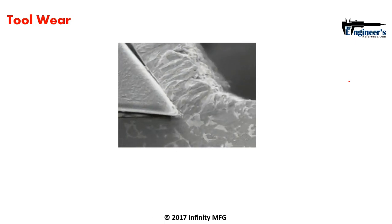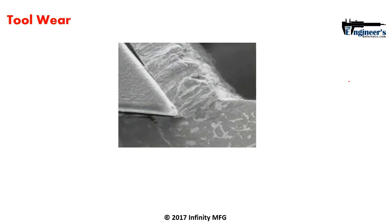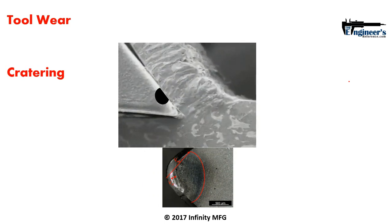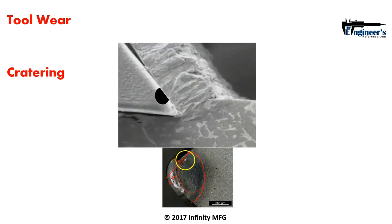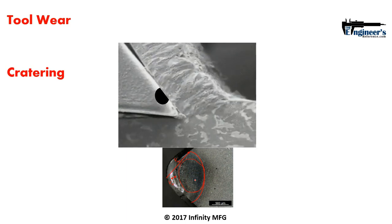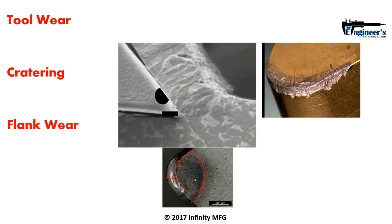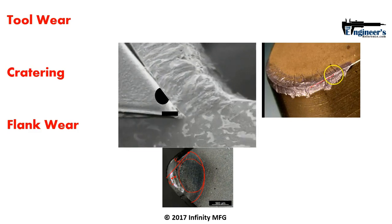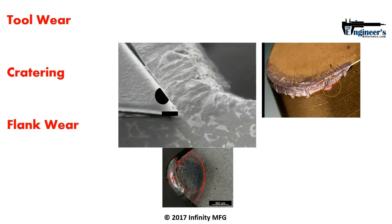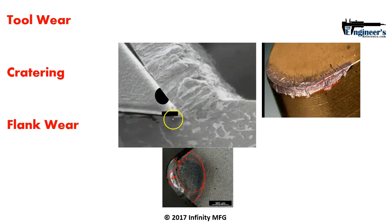With all this force and heat being generated, we're going to have some type of tool wear. One type is cratering, which happens right on the rake face — a hole worn into it from the chip running against it. The amount of cratering depends on how much friction is present. Then there's flank wear, which is how we usually determine tool life. It's measured from the edge or nose of the tool down to how much of the flank face has been worn away.